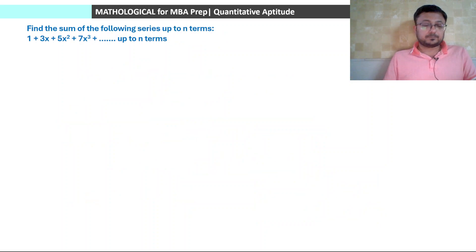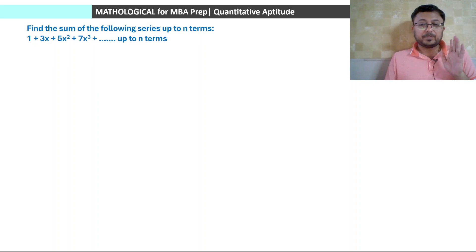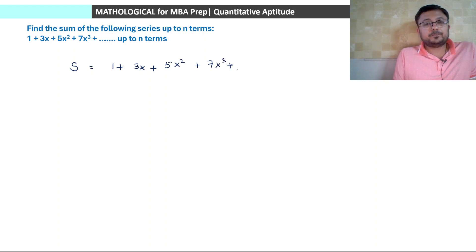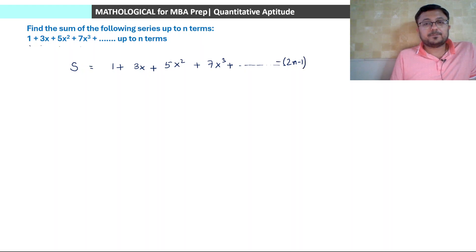Next question — similar approach but now the series is finite, up to n terms: 1 + 3x + 5x² + 7x³ + ... Find the sum up to n terms. Let S = 1 + 3x + 5x² + 7x³ + ... The nth term: the AP part 1, 3, 5, 7 gives (2n−1) and the GP part 1, x, x², x³ gives x^(n−1), so the nth term = (2n−1)·x^(n−1).